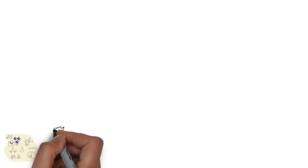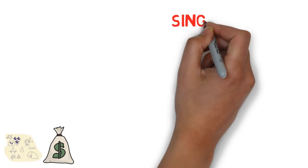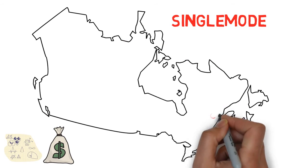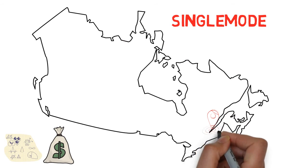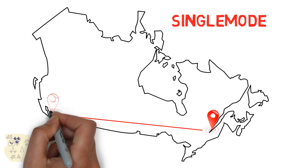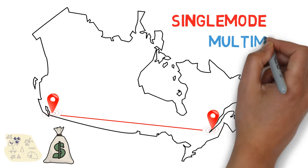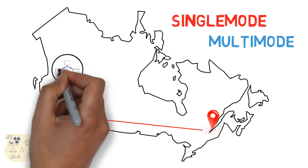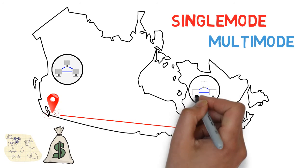The properties and costs associated with each fiber dictate its applications. Single modes are generally used over long distances such as in wide area networks. On the other hand, multi-modes are used for short distances such as in local area networks.